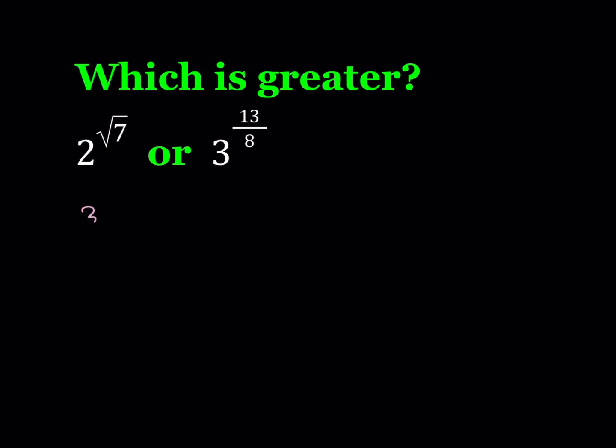Notice that 3 root 7 is equal to square root of 63 and that is less than 8 because the square root of 64 is equal to 8. This gives us that 3 root 7 is less than 8.